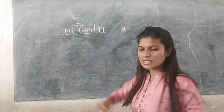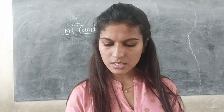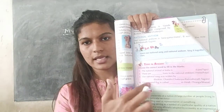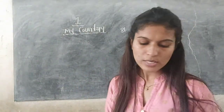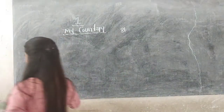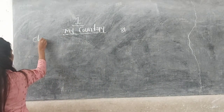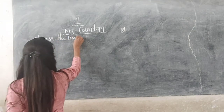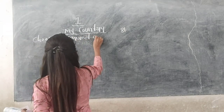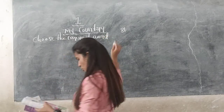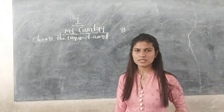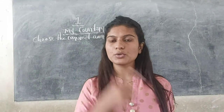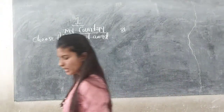You have been given some questions there. Choose the correct answer — choose the correct word to fill in the blanks. Can you see this? Let's answer them. How many questions are there? There are four questions. Firstly write the answer in the textbook, afterwards write the questions and answers in your notebook.